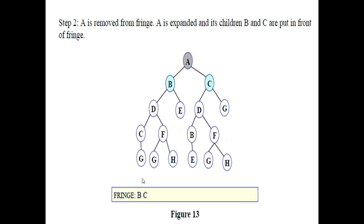Now the newly generated fringe or OPEN list is B, C. Because B is at the first position, we pick B and find its successors, which are D and E.